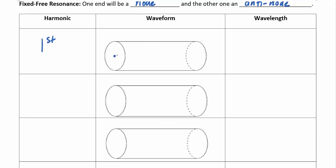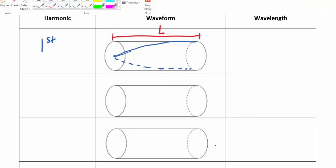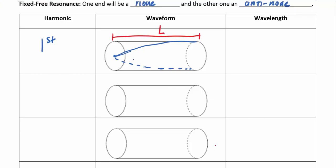The first harmonic of the fixed-free tube has a node at the closed end and an antinode at the open end. This is different because I don't even fit half a wavelength — only one quarter of a wavelength fits into the tube length L. So λ/4 = L, meaning the wavelength equals 4L: λ = 4L.